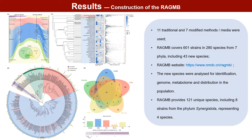These strains are stored in the RAGMB, with detailed information available on the RAGMB website. To further investigate the potential functions of the 43 novel species, we conducted analyses on their identification, genomics, metabolomics, and distribution within populations.